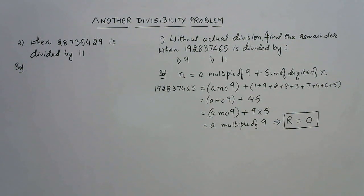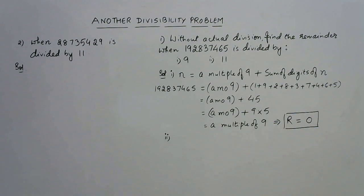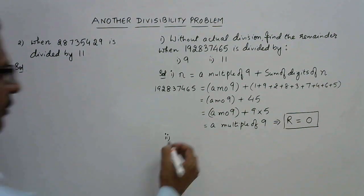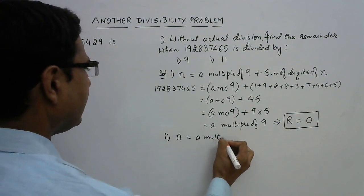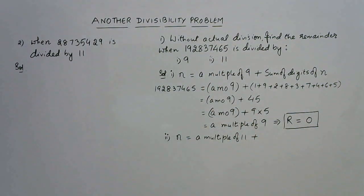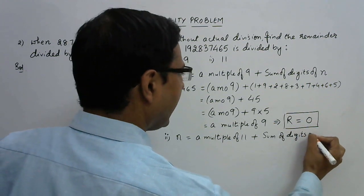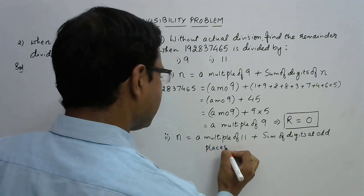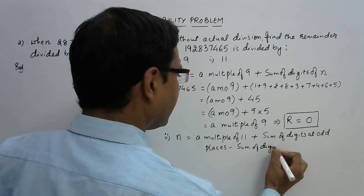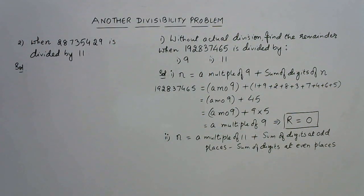Now what happens when we divide this number by 11? For the second part we again need to express the number similarly, but the divisibility rule will change. When n is a multiple of 11, the rule is: sum of digits at odd places minus sum of digits at even places. Whenever we test divisibility by 11, we find the sum of digits at odd places and even places, subtract the two, and check whether the result is either 0 or divisible by 11.